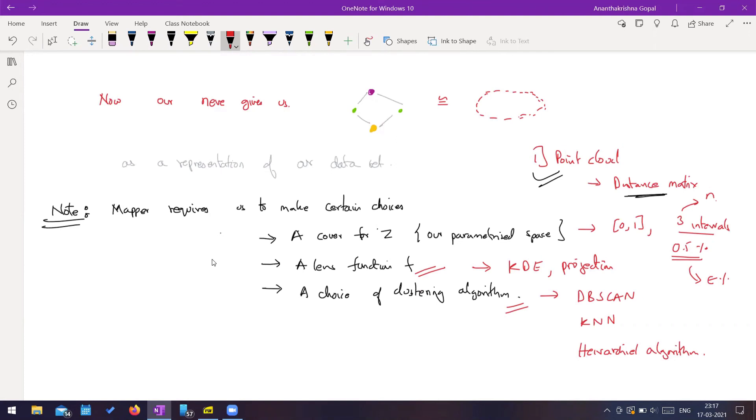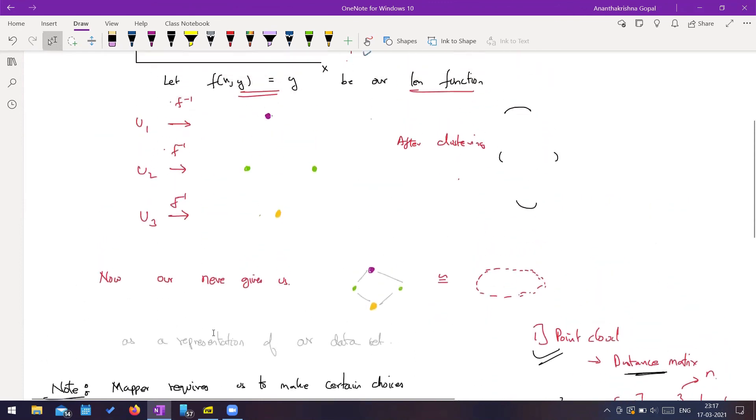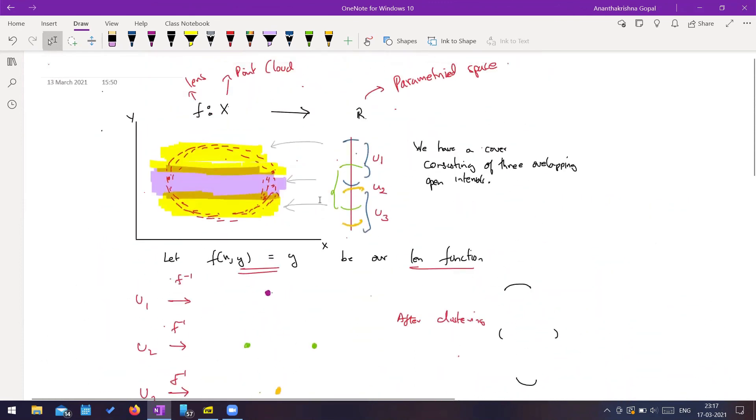Next is the choice of a clustering algorithm. So DBSCAN, KNN, these are popular algorithms. You can even do some kind of hierarchical clustering, and many others. So that sort of gives us an outline for what the mapper algorithm does.